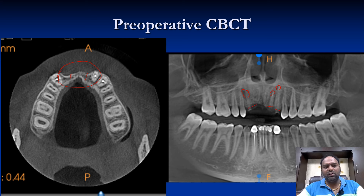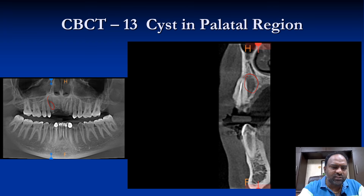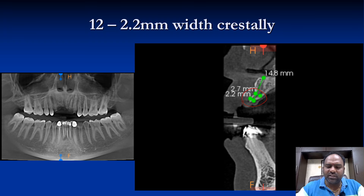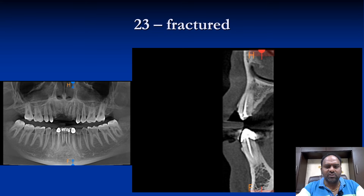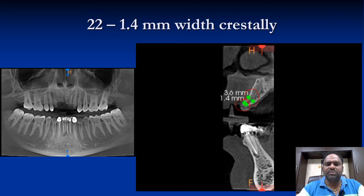We advised him the removal of these teeth as well and bone augmentation for this case. Going into the depth of the individual scan, the canine was having a cyst, and the measurement in the lateral incisor was only 2 to 2.7 millimeters. The 2-3 was also fractured, and in the 2-2 region the measurement was only 1.4 to 3.6 millimeters. Ideally, implant placement is not possible in these scenarios because of the 1-2-3 rule which we follow in implants.